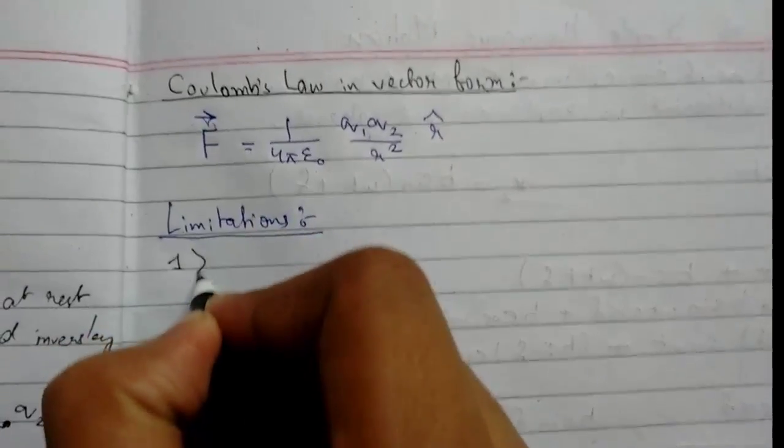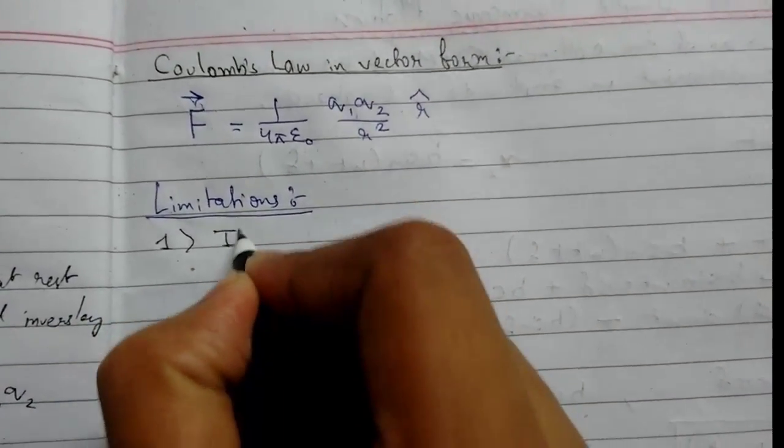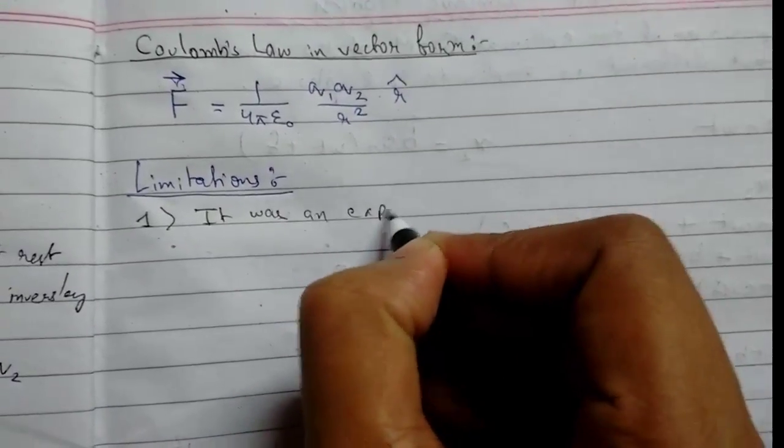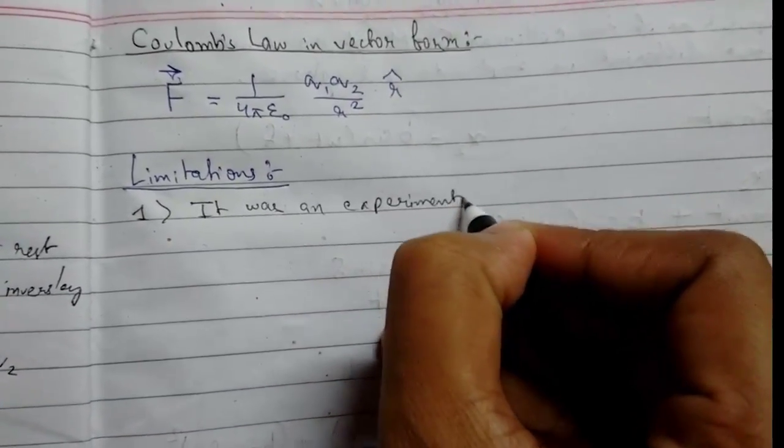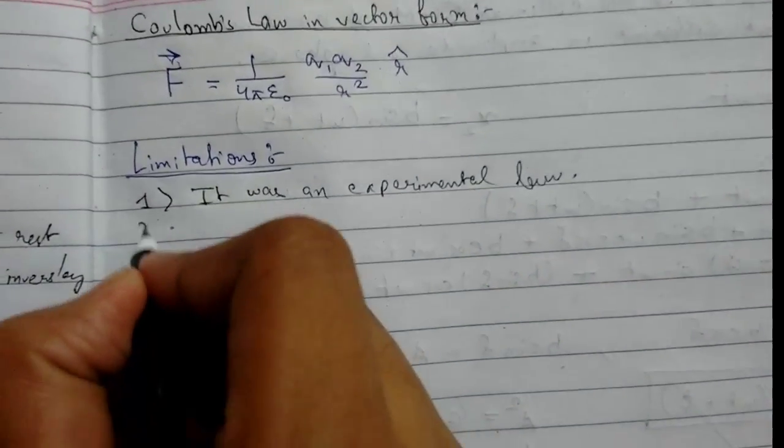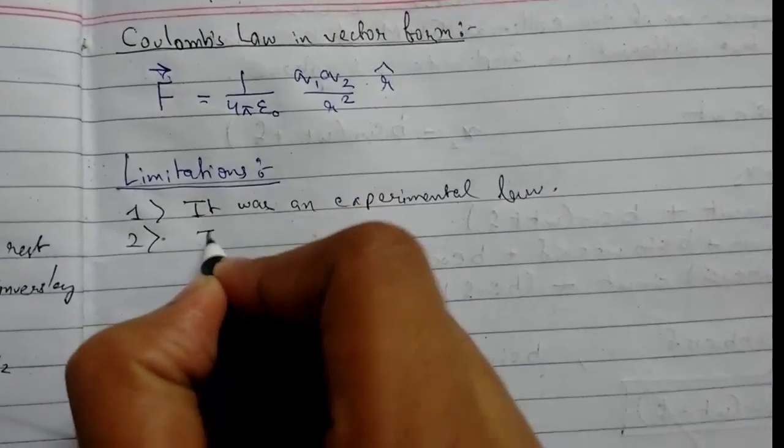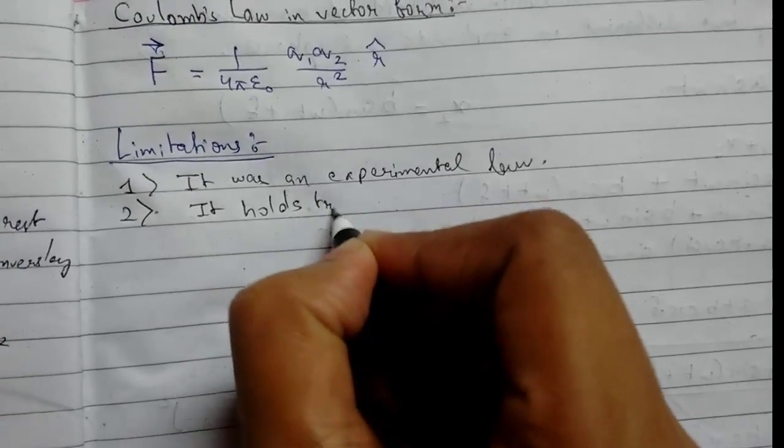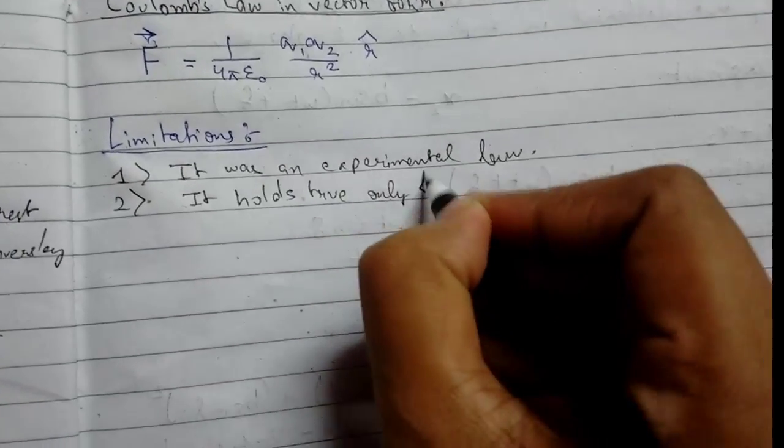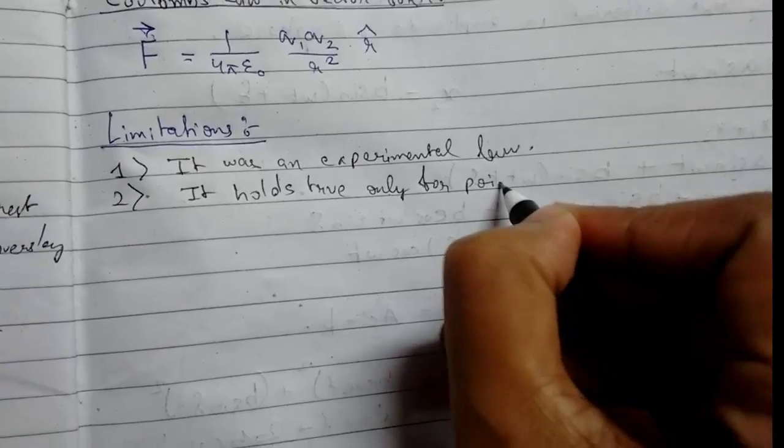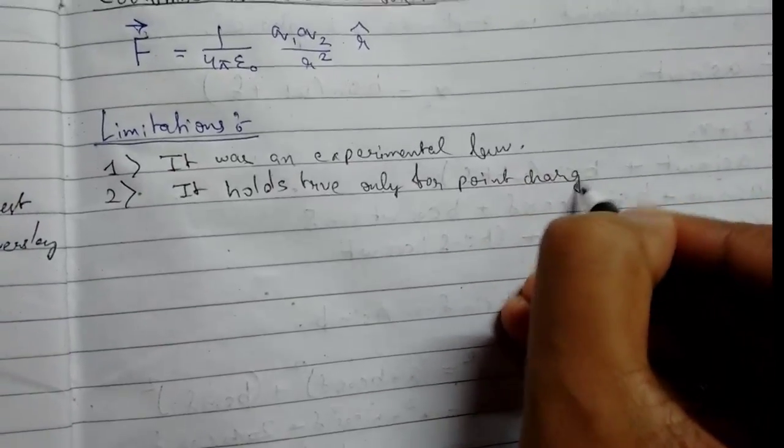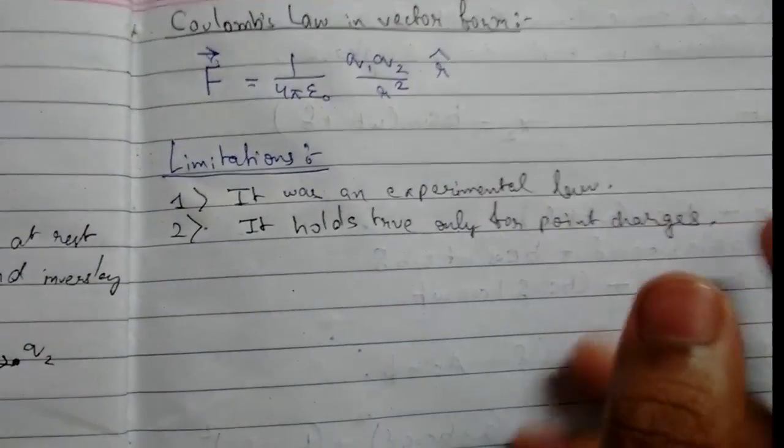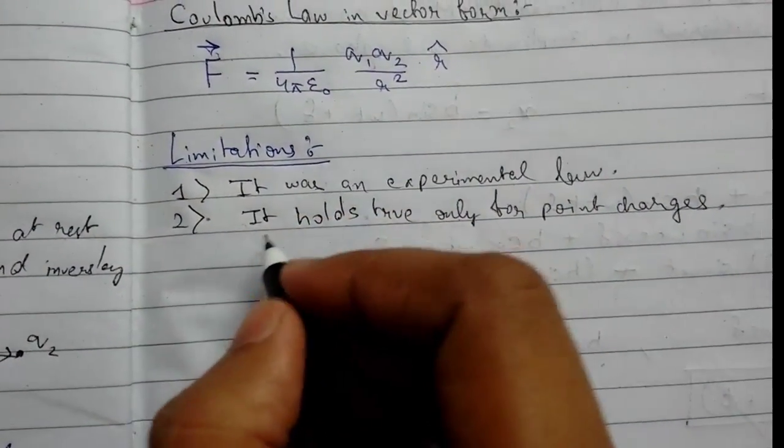Number one: it was an experimental law. Number two: it holds true only for point charges. If a body has larger dimensions, it is not applicable.